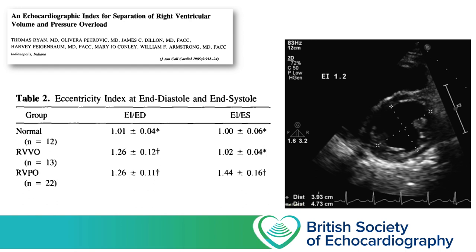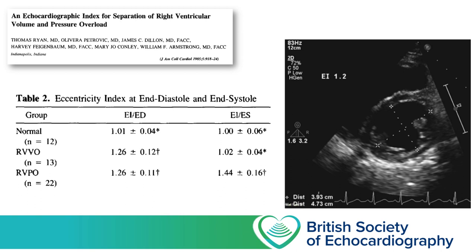For reference, one study in stable outpatients with known RV volume overload undergoing simultaneous echocardiogram and pulmonary artery catheter measurements found that these patients had septal flattening during diastole with a mean eccentricity index of 1.26, but only those with elevated pulmonary pressures on right heart catheterisation had septal flattening persisting into systole, whereas normal ventricular shape was restored in systole in those with pulmonary pressures less than 40 mmHg.